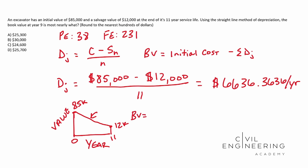So if we write the book value formula: book value equals initial cost of $85,000 minus the sum of depreciation for every year. We can multiply our slope by the number of years we want — which is year nine. You can add up every single year individually and you'll get the same result. Plugging in $6,636.36 times 9 years gives us our book value.